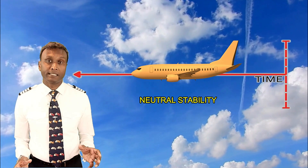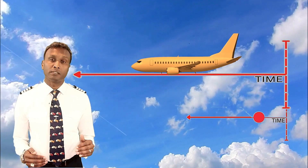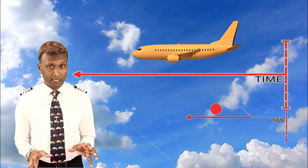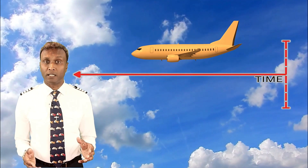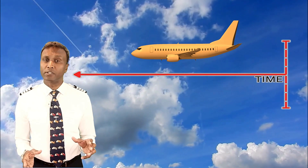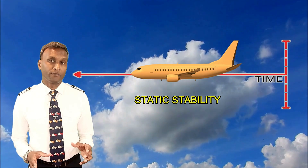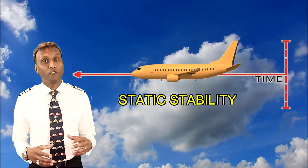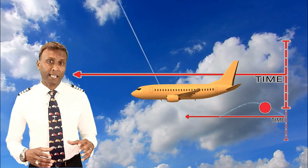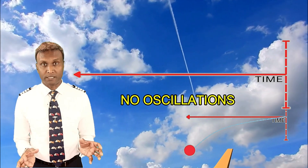Neutral stability has no self-correction. In a neutrally stable condition, the aircraft neither returns to its original state nor diverges further after a disturbance. Neutral stability is less common and often requires active control inputs. Static stability refers to the initial response of an aircraft to a disturbance — it determines whether the aircraft returns to its original position or diverges further from it.